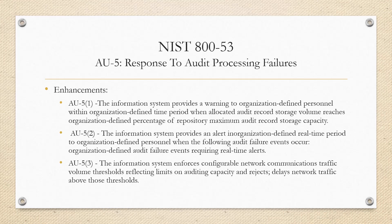AU5 Enhancement 1 really talks about the information system providing a warning to organizationally defined personnel within a specific defined time period — that time period is also defined by your organization — when your record storage volume has been reached or the repository maximum audit record storage capacity has been reached a specific percentage. So if you want to define a threshold internally, we're just going to be looking for evidence that that happens. If you're approaching or have reached that threshold, let's see a screenshot of that warning that was sent, and it should align with your AU procedures and who those defined personnel and roles were.